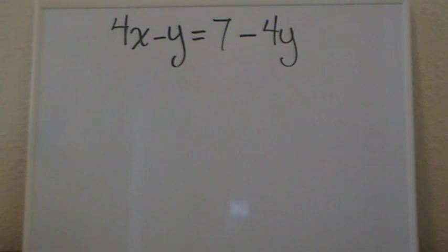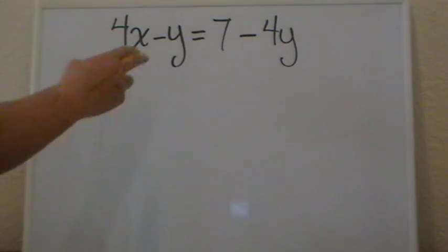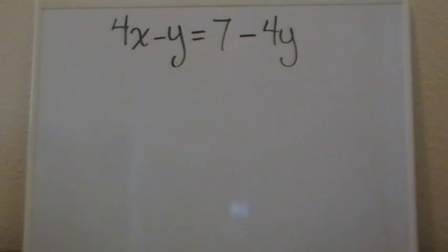The next equation that we have is 4x minus y equals 7 minus 4y. Now the big difference in this equation is that we have the variable y on both sides, and that happens to be the variable that we want to isolate. We want to solve for y.